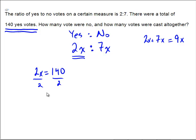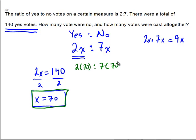Divide both sides by 2, so we get x equals 70. Then we can take that answer of x equals 70 and back substitute into the ratio to yield 2 times 70 to 7 times 70, which would be 140 and 490.